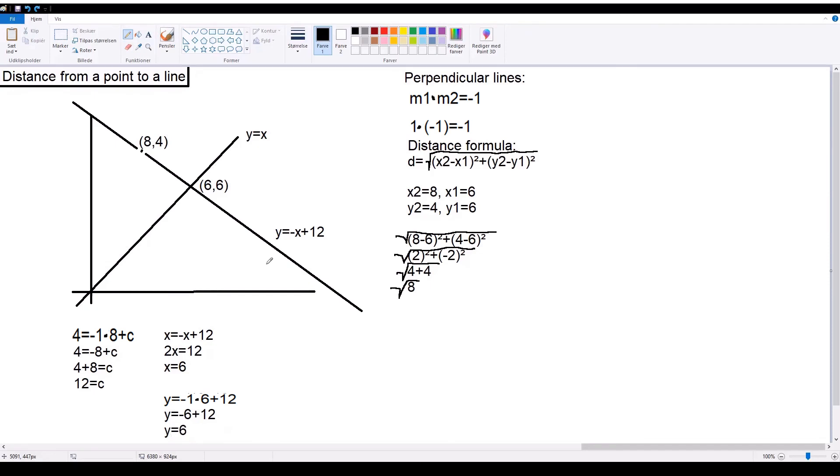Now, finally, we can use the distance formula. You can see the distance formula here. The distance equals the square root of x2 minus x1 squared plus y2 minus y1 squared, and those two in brackets. Here, our x2, we can choose to be 8, and x1, we choose to be 6, while y2 is 4, and y1 is 6. We just do this because of convenience. It doesn't really matter which one is which. It's just preferable that you choose the larger number to be x2 or y2.